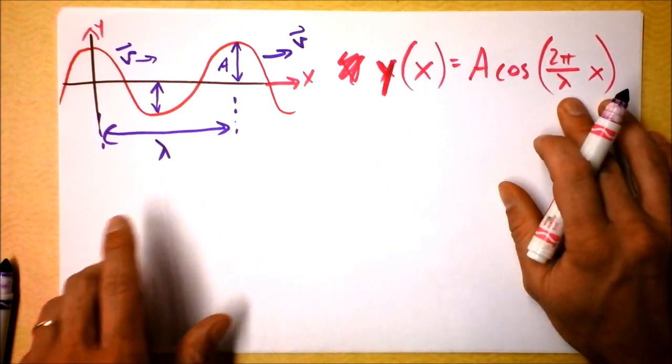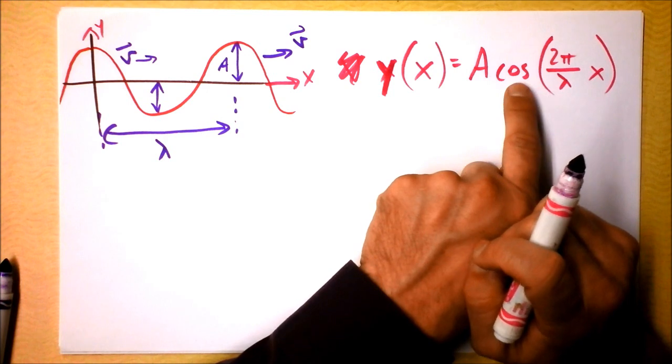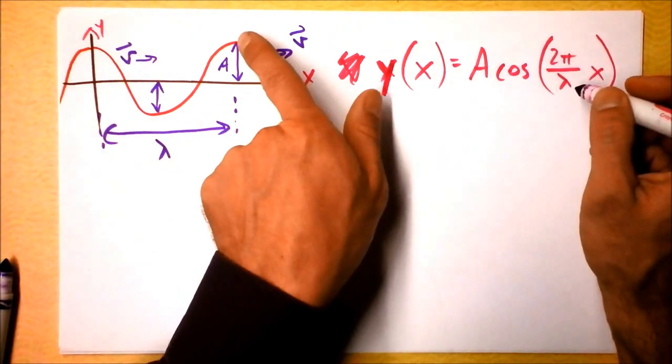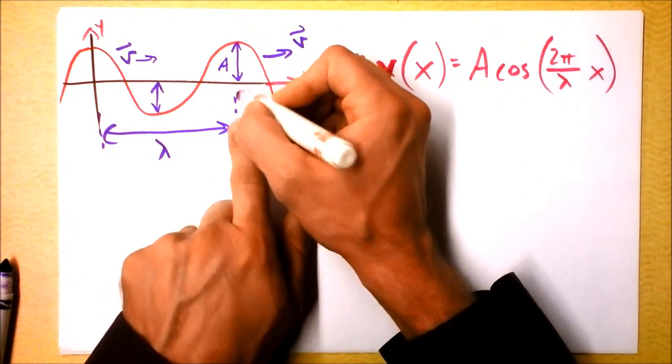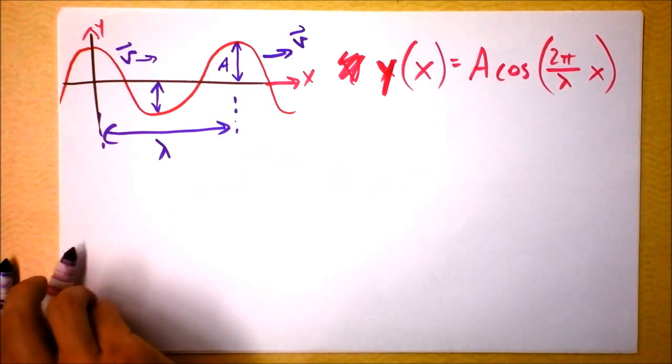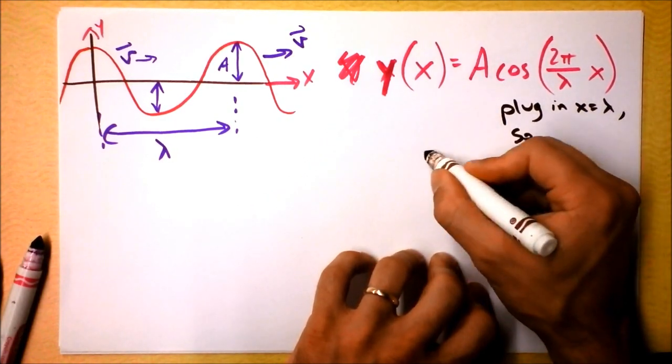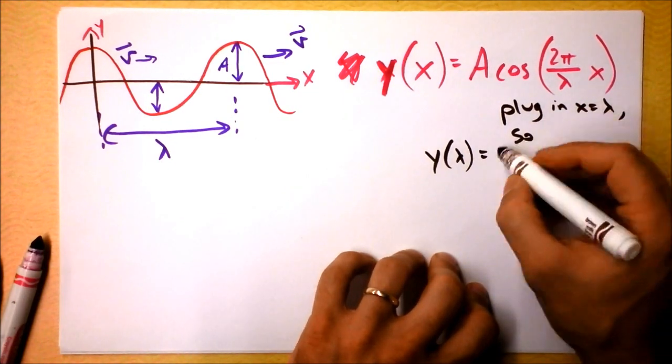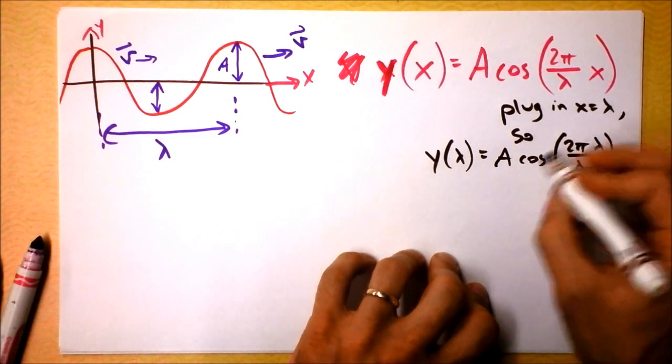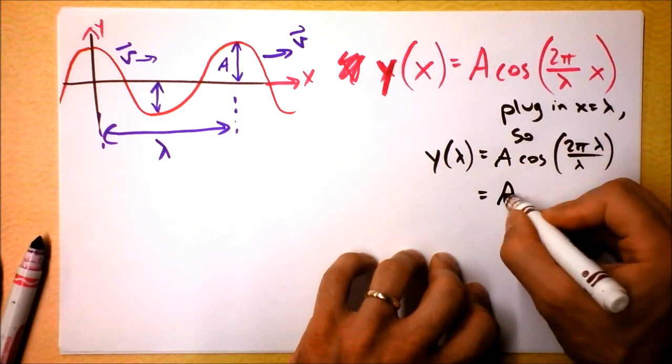Now let's see what kind of sense this makes. I'm suggesting that the position is A every time the cosine gives me one. So the cosine will give me one when its argument is zero, right there, because x is equal to zero. And the cosine should also give me one right here. What's x when we're right here? Well, x is lambda, because x is zero here, x is lambda here. So if I plug in lambda right here, so y of lambda is A times the cosine of 2π lambda over lambda, and that is the cosine of zero. Check it out, it's the cosine of 2π, which is the same as the cosine of zero, which is just equal to A.